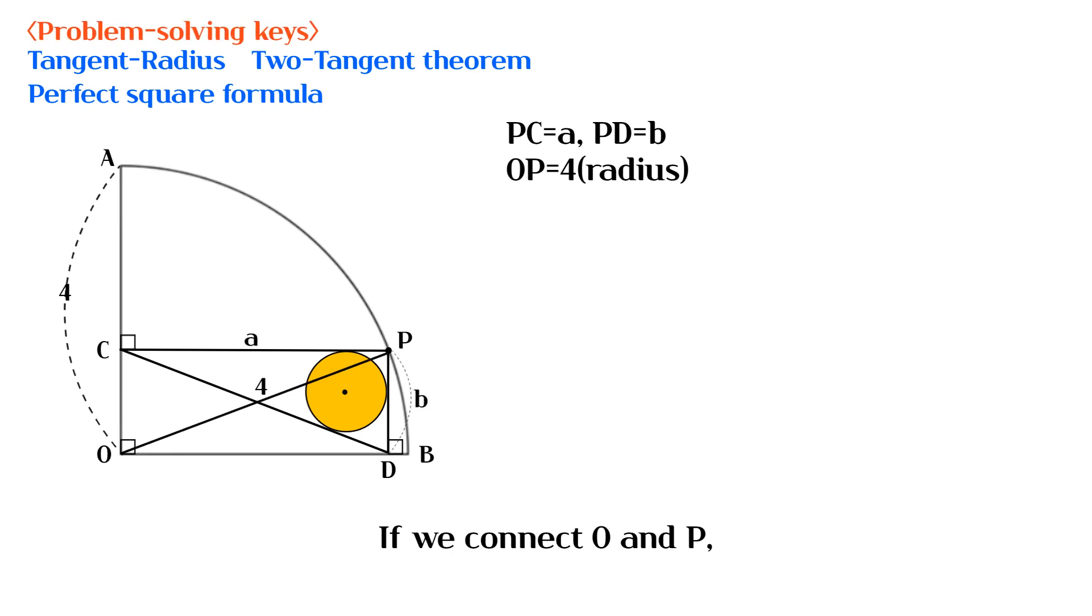If we connect O and P, the length of OP is 4. Since the diagonals of a rectangle have the same length, the length of CD is also 4.